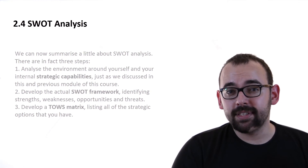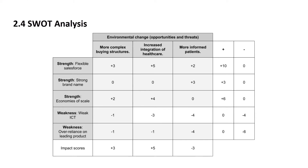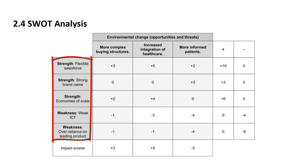Let's do the SWOT analysis of an imaginary pharmaceutical company. We start at the top, where we have listed several environmental changes that have occurred: more complex buying structures, increased integration of healthcare, and more informed patients. On the left, we have several strengths and weaknesses listed. Strengths are a flexible sales force, strong brand name, and economies of scale. Weaknesses we know of are weak ICT and over-reliance on a leading product.